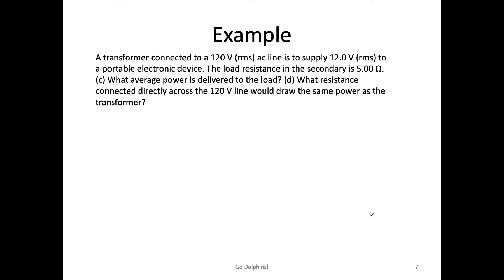Next question: what average power is the device consuming delivered to the load? So power, average power should be given by RMS current squared times R. And I know this is 2.4, my R is 5, the unit is watts. This gives me 28.8 watts.